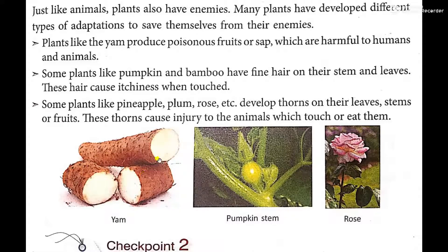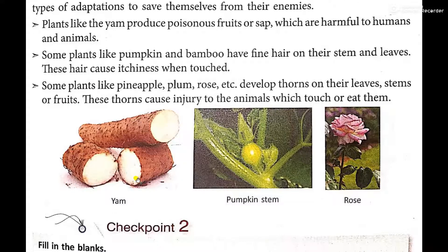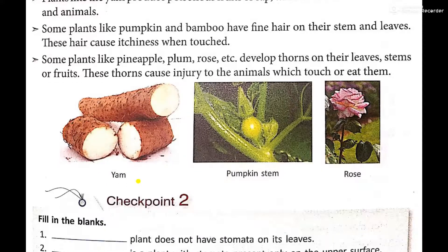Here you can see a yam plant stem — if you cut it, a typical kind of juice comes out which is poisonous in nature, so animals do not consume it. This is a pumpkin stem — you can see hair-like structures which are very sharp and thorny, so animals generally don't touch it. Here is a rose plant — you can see thorns, due to which animals do not harm this plant. These are adaptations which help plants save themselves from animals and human beings.